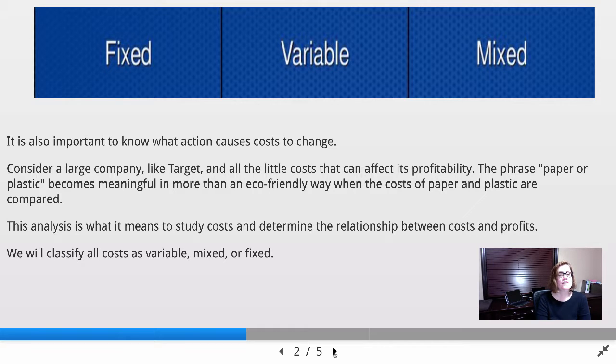We're going to split costs into fixed, variable, and mixed, and that's how we're going to classify them. Fixed costs stay the same in total, but they might change per unit based on the number of units. Variable costs change as we produce more units. They stay the same per unit, but change in total.